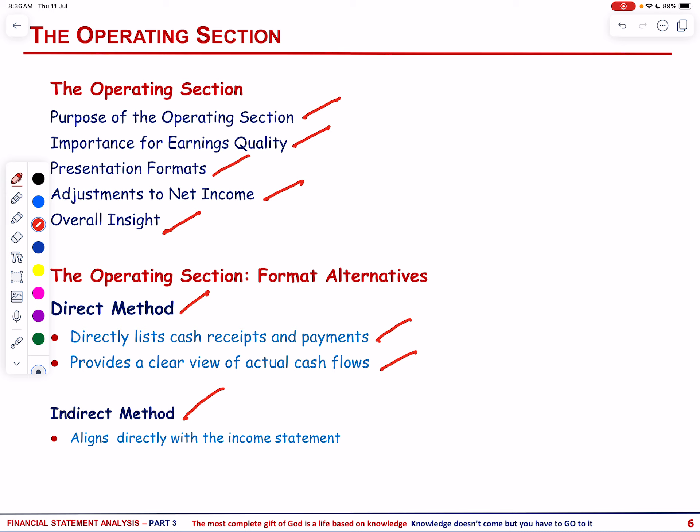The indirect method starts with net income and adjusts for non-cash items to derive cash flows from operations. Its advantage is that it aligns directly with the income statement, making it easier to interpret for some users. However, it requires reconciling adjustments like changes in accounts receivable and is less straightforward. Despite standard setters preferring the direct method for its clarity, the indirect method is overwhelmingly used by companies for practical reasons, as most firms find it simpler to implement.